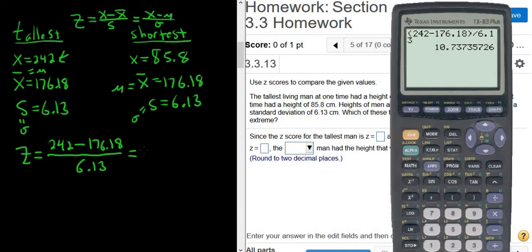So 10.74. Wow, that's really unusual. Right? 10.74. Anything above 2 is unusually tall.